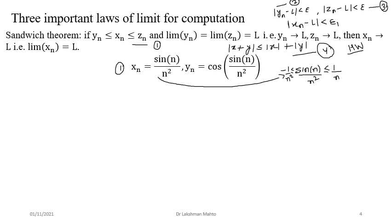This implies that xn lies between −1/n² and 1/n². As n tends to infinity, both −1/n² and 1/n² approach zero. Therefore, by the Sandwich Theorem, xn also approaches zero.